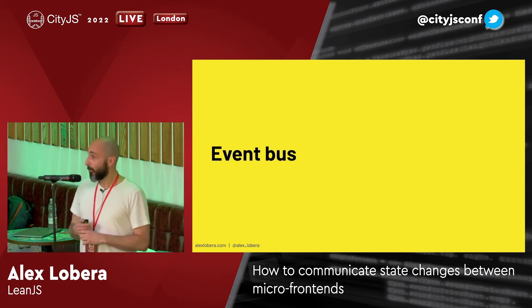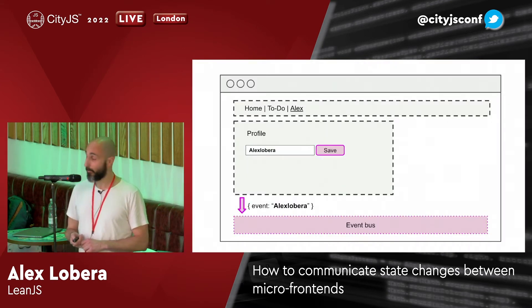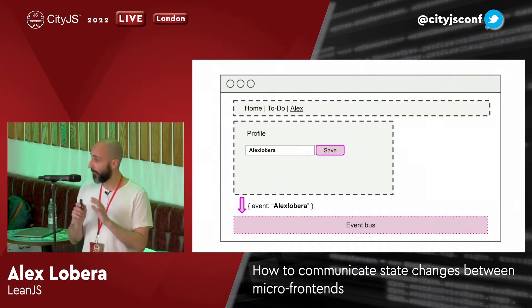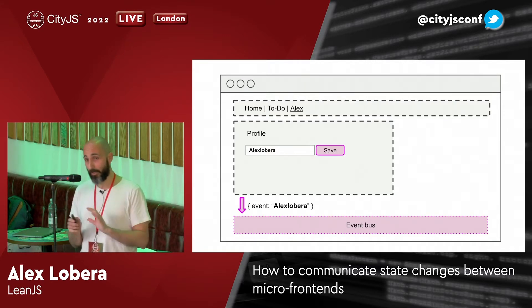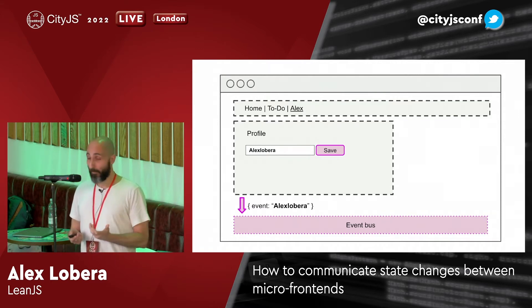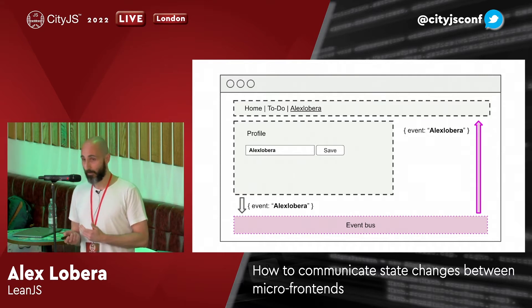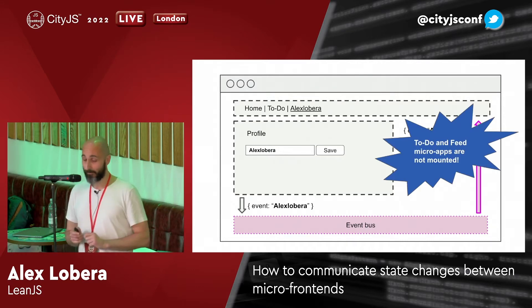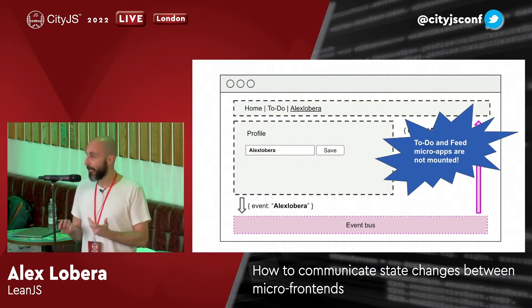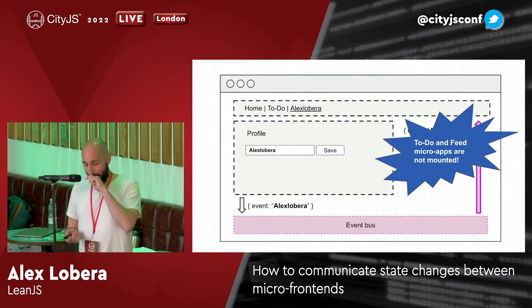The first idea I thought of was to use an event bus. It's pretty simple: we have a component that listens for events, the profile creates an event and puts it on the bus, and another micro-app listening to it responds to that event. And it works. However, the to-do and feed micro-apps may not be mounted — they are not there. And if you're not there, you can't listen. So we have a problem here.